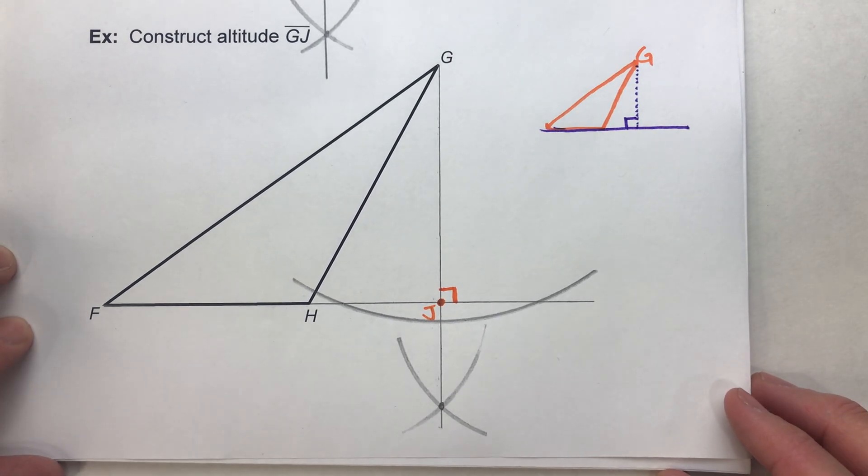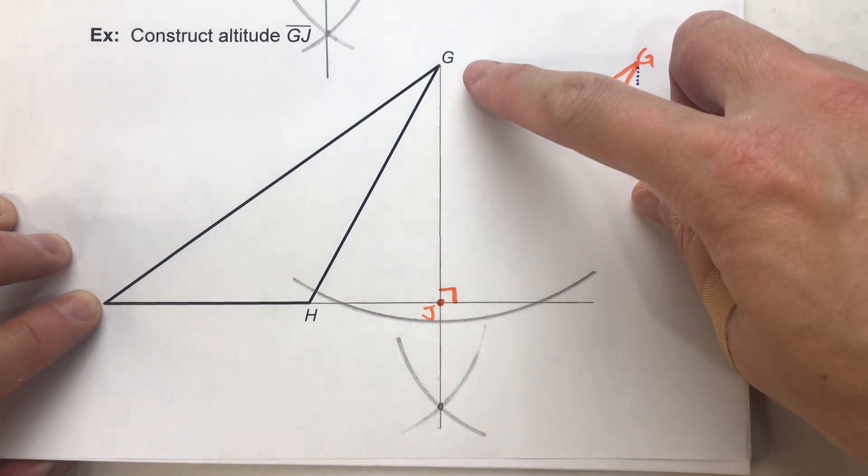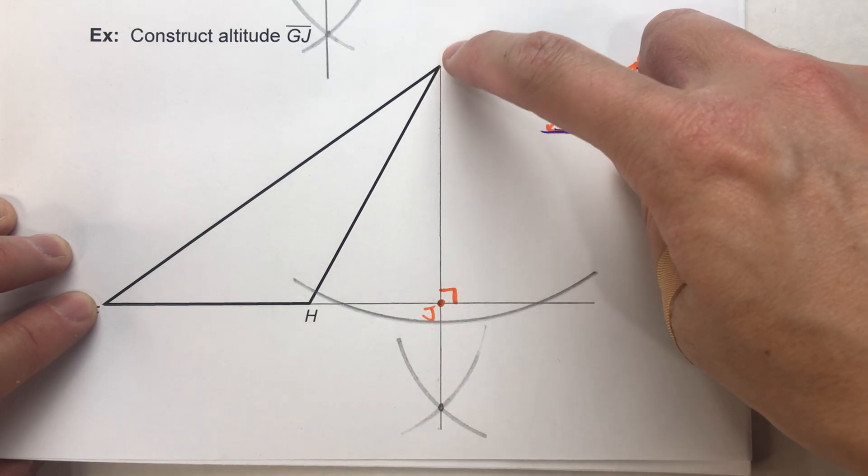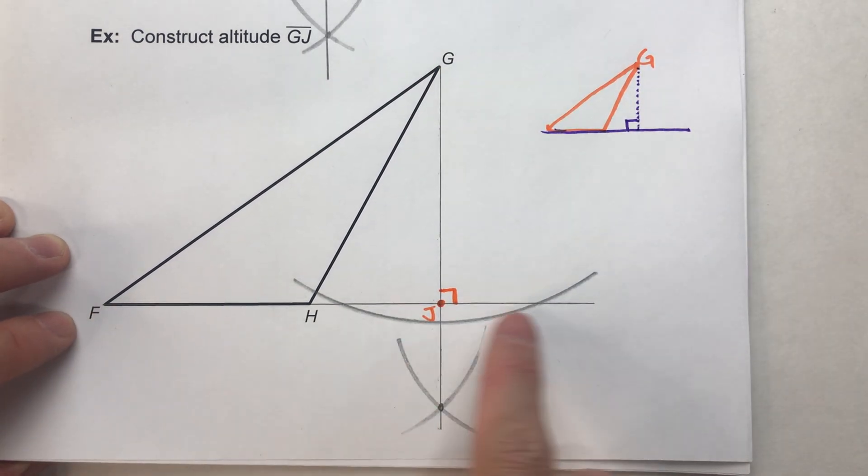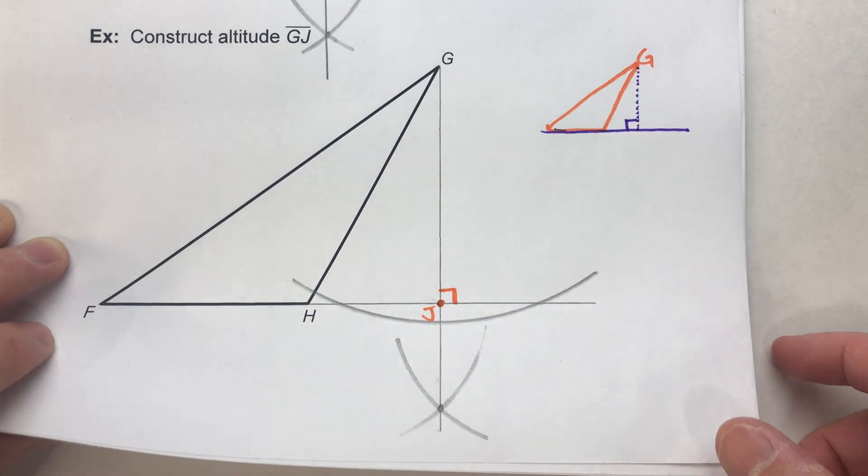So what we're basically doing here is constructing a perpendicular to a line through a given point. You could almost imagine just point G just floating up there and then having a line down below. And what you're just doing is creating a perpendicular to it.